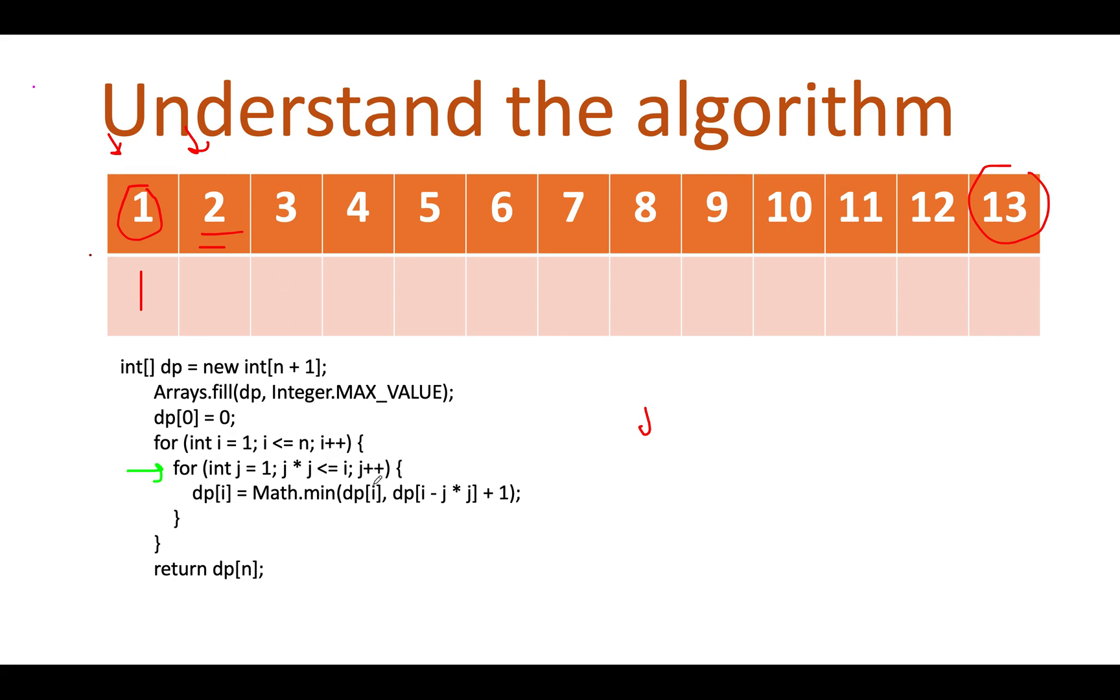I'll continue the operation. So let's start the operation for the j iterator. j points to one, one into one is less than equal to two. That's correct. So we'll continue the operation. What we are going to do will calculate dp of i minus j into j which is dp of two minus one into one which is nothing but one. So it turns out to be dp of one.